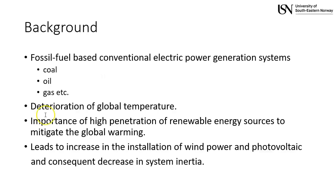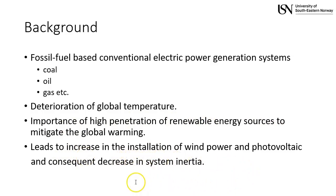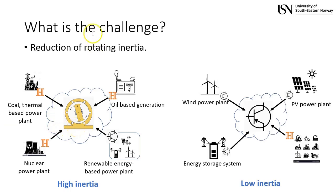Short background: the conventional power generation systems are largely occupied by fossil fuels — coal, oil, and gas. This causes deterioration of the global temperature, which is why we feel the importance of high penetration of renewable energy sources to mitigate global warming. This leads to increased installation of wind power and photovoltaic, and at the same time there is a consequent decrease in system inertia.